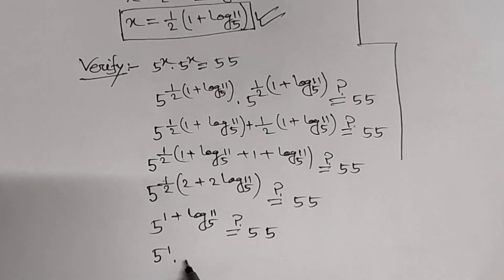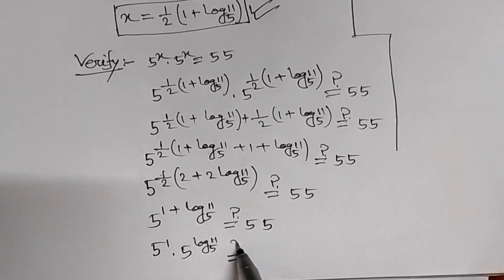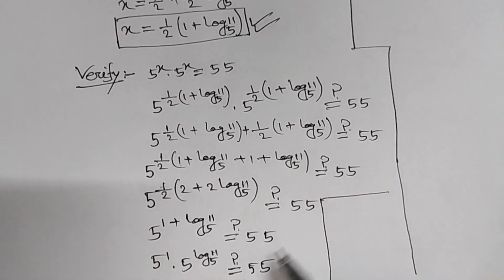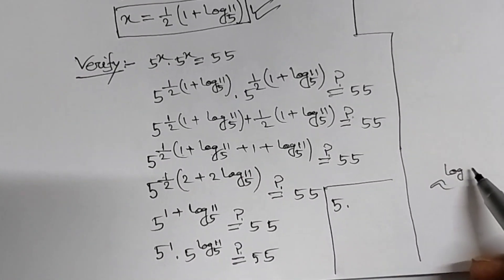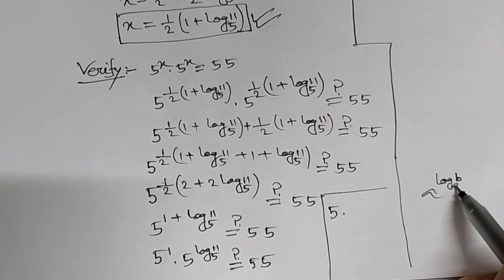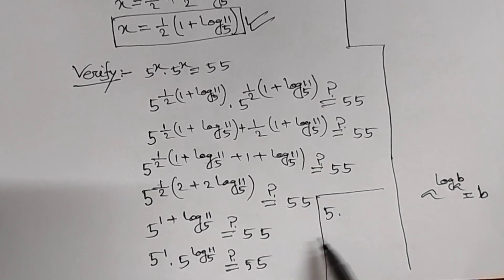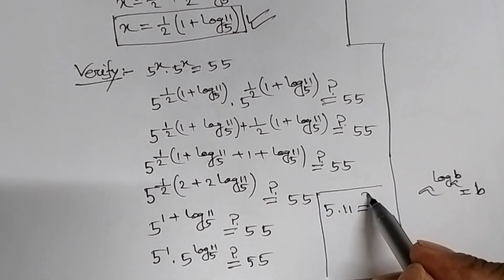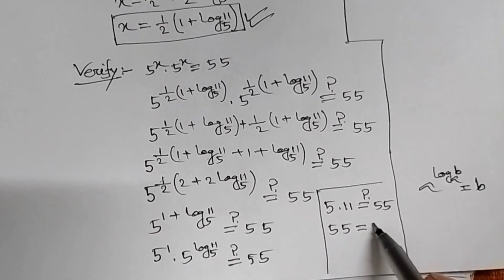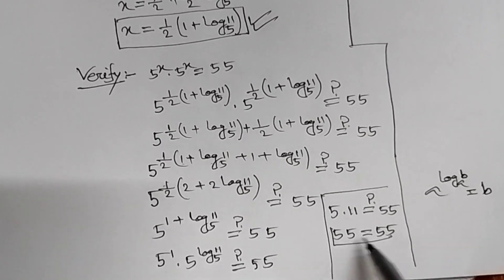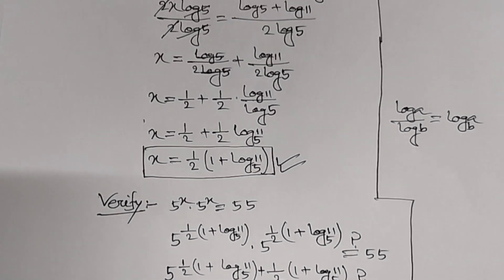Simplifying, we get 5 power 1 times 5 power log 11 base 5. That is 5 times 5 power log 11 base 5. We know the formula a power log b base a equal to b, therefore 5 power log 11 base 5 equals 11. So 5 times 11 equals 55, which equals 55. This proves our answer is correct. Please like, share, and subscribe to my channel if you like my videos. Thank you.